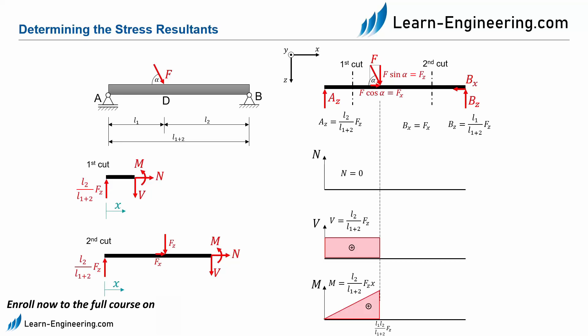We now carry out the same procedure for the second cut and can thus calculate the normal force as N equal to minus FX through the sum of all forces in the X direction. For the vertical force, we now also calculate the sum of all forces in the Z direction, which leads us to V equal to L2 divided by L1 plus L2 minus 1 times FZ. Since the force is now negative, we also enter this in the shear force diagram.